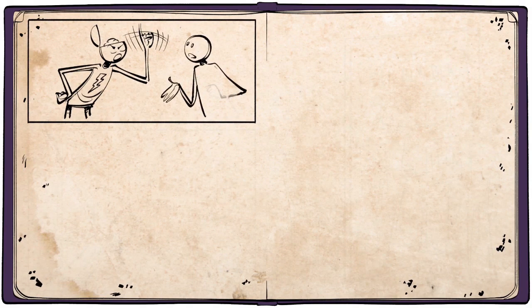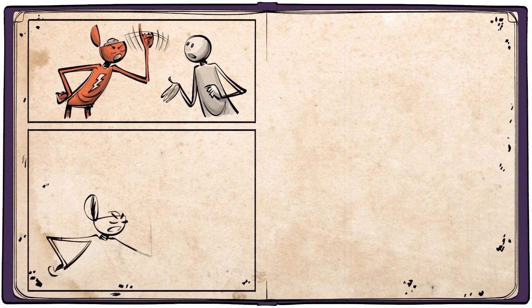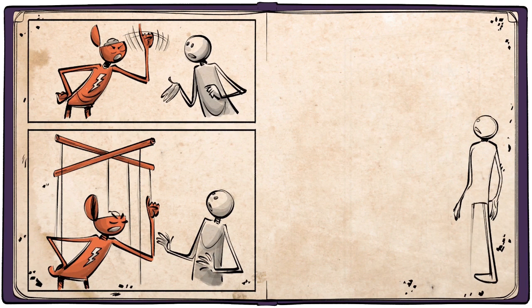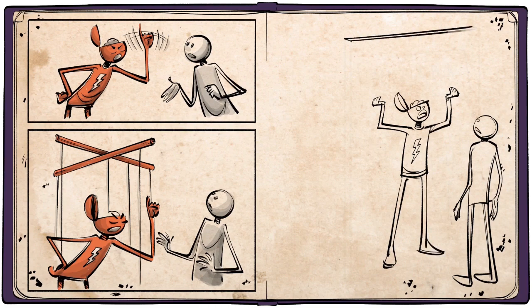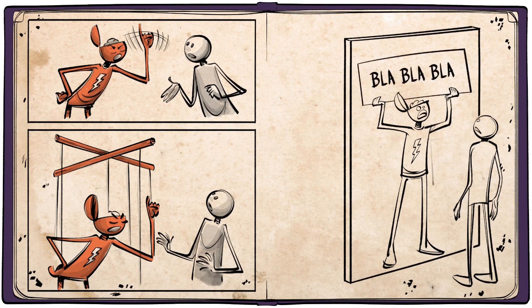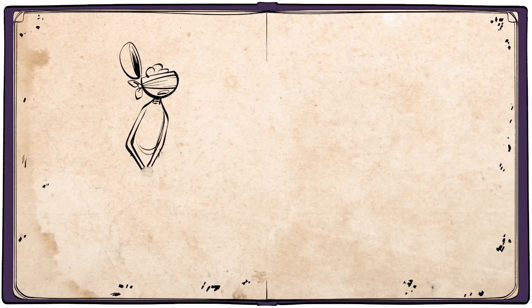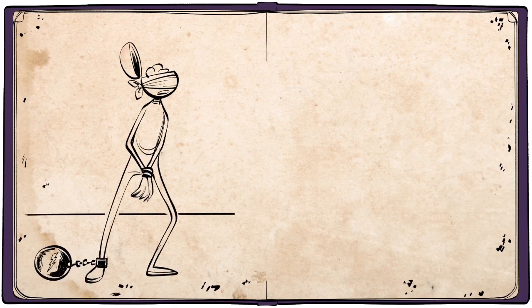The fact that the stupid person is often stubborn must not blind us from the fact that he is not independent. In conversation with him, one virtually feels that one is dealing not at all with him as a person, but with slogans, catchwords and the like that have taken possession of him. He is under a spell, blinded, misused, and is abused in his very being.